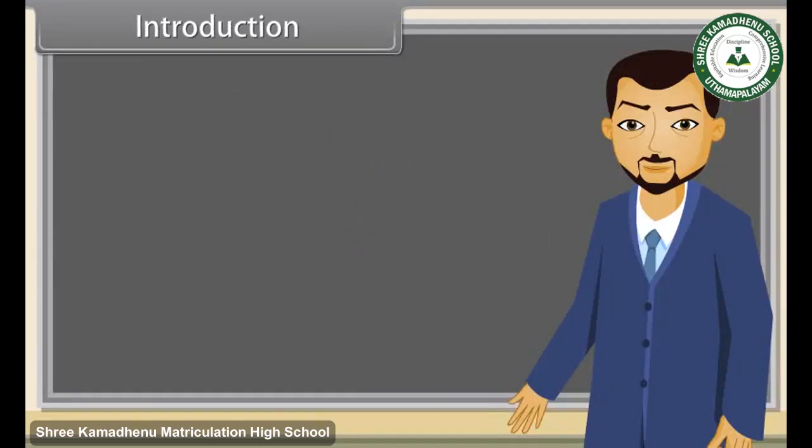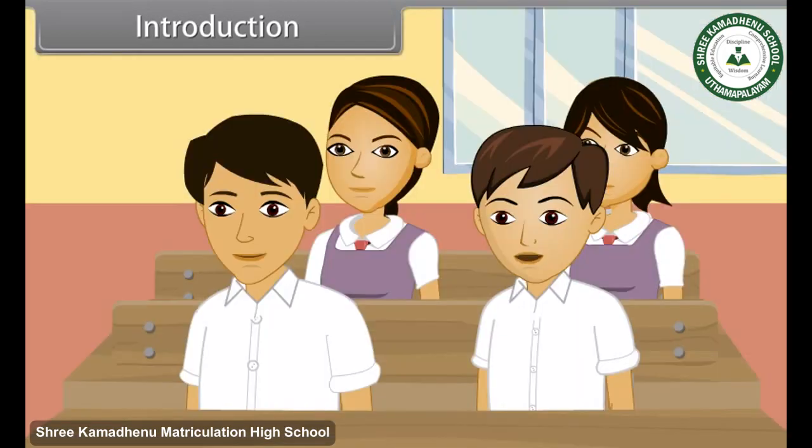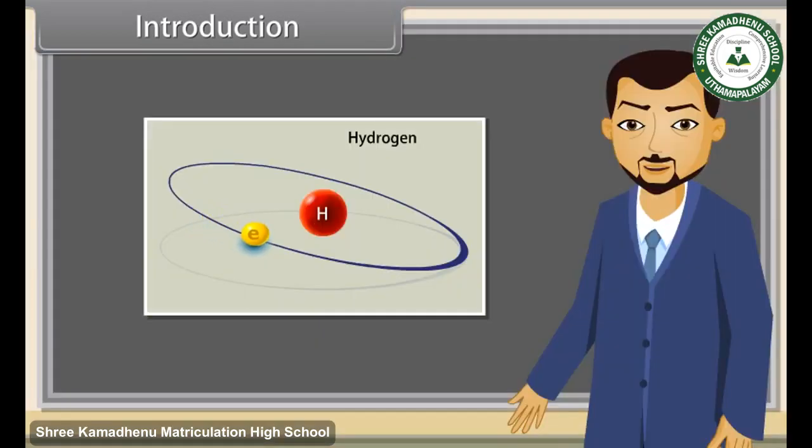Introduction. Students, now we are going to know about the thing by which matter has been created. Can anyone of you tell me the name of that particular thing? Yes, you, Raoul. Sir, it is atom. Absolutely right. Atom is the smallest thing by which matter is made.